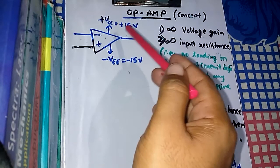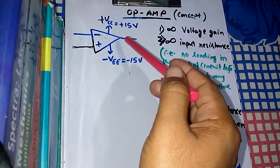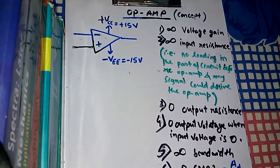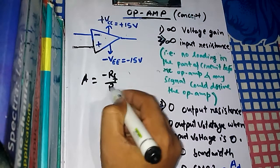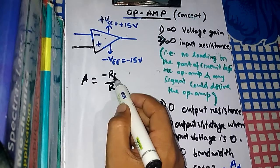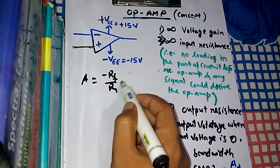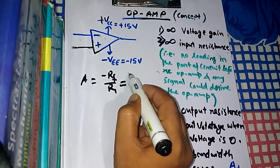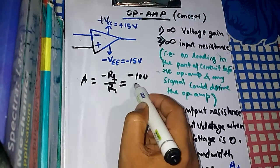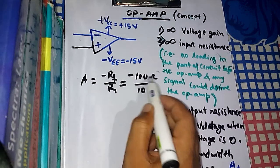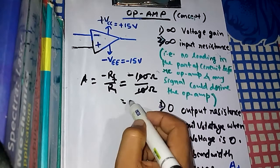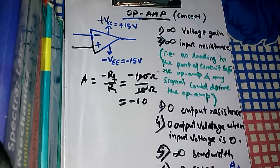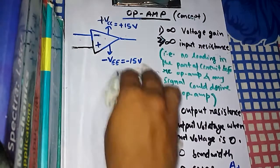With a feedback circuit, the voltage gain is finite and we decide what it should be. There is a formula: A = -Rf/R1 for a negative feedback circuit. If we use a specific Rf and R1, we can have any gain. For example, if we want a gain of 10, we can use 100 ohms for Rf and 10 ohms for R1, giving us a gain of -10 — magnitude 10.